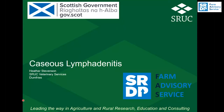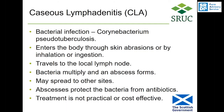Welcome to this short presentation on caseous lymphadenitis in sheep. Caseous lymphadenitis, or CLA, is a bacterial infection caused by the bacteria Corynebacterium pseudotuberculosis. This bacteria enters the body through skin abrasions — which can be invisible to the eye, they can be so microscopic — or by inhalation or ingestion.